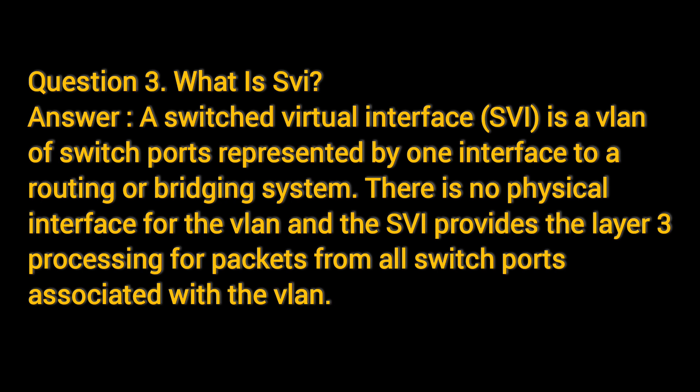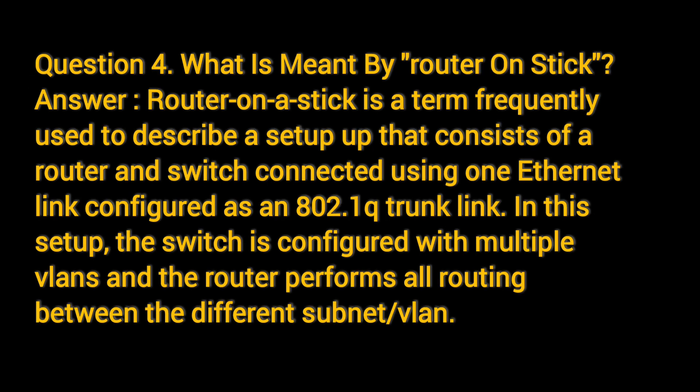Question 4: What is meant by Router on a Stick? Router on a Stick is a term frequently used to describe a setup that consists of a router and switch connected using one Ethernet link configured as an 802.1Q trunk link. In this setup, the switch is configured with multiple VLANs and the router performs all routing between the different subnet VLANs.